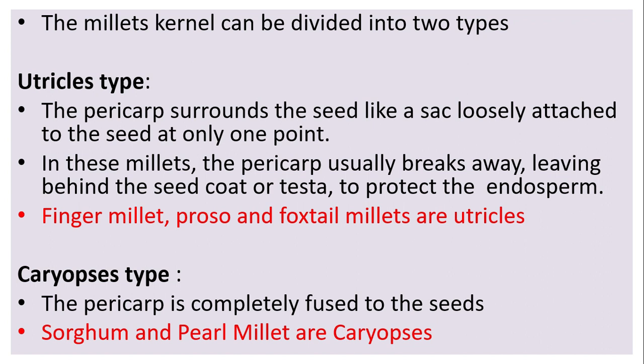The millet kernel can be divided into two types. In cereals it is known as the caryopsis type, but in millets there are two different types: utricle and caryopsis. In the utricle type, the pericarp surrounds the seed like a sack, loosely attached to the seed at only one point. In these millets the pericarp usually breaks away, leaving behind the seed coat or testa to protect the endosperm. Examples: finger millet, proso, and foxtail millets.